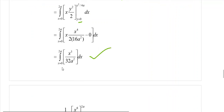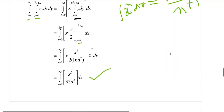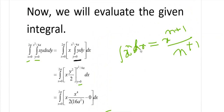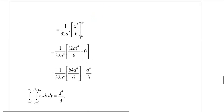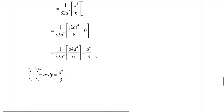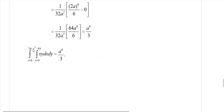Now we integrate with respect to x. Using the same formula, the integral of x to the power 5 is x to the power 6 by 6, so we have (1 by 32a²) times (x⁶ by 6), with limits from 0 to 2a. Substituting x equals 2a: (2a)⁶ by 6 equals 64a⁶ by 6. With 32 and 64 cancelling and a² and a² cancelling, we finally get a to the power 6 by 3. So the required integral value is a⁶/3.